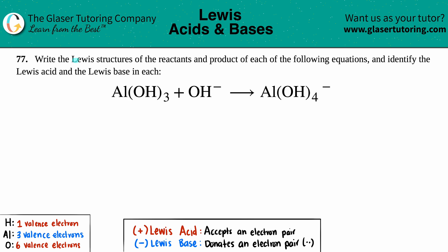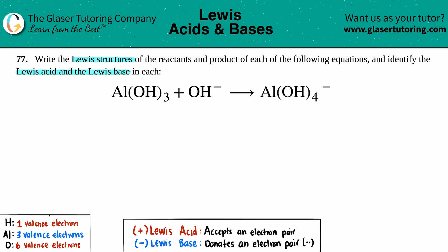Number seven: write the Lewis structures of the reactants and product of each of the following equations and identify the Lewis acid and the Lewis base in each. Writing the Lewis structure shouldn't be that new — there was a whole chapter on how to write Lewis structures, so this will be a review. The only new thing is identifying which is the Lewis acid and the base from those structures. I've written down the valence electrons each element has for reference.